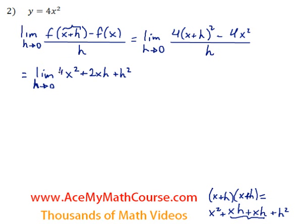But I have the 4 right in front. I almost forgot it actually. And we have the minus 4x squared, and that's all over h.